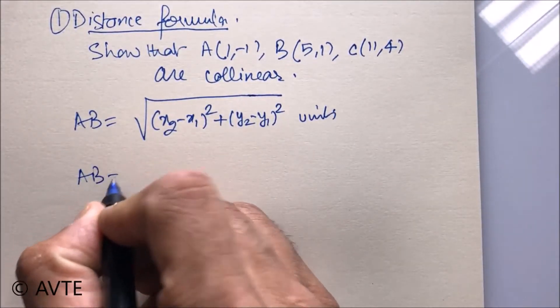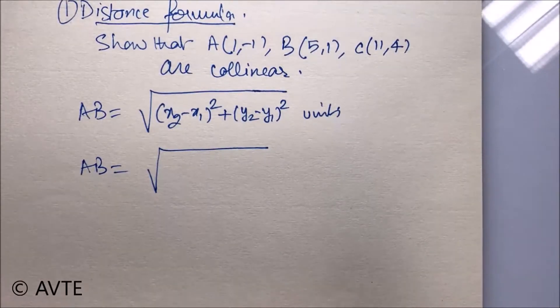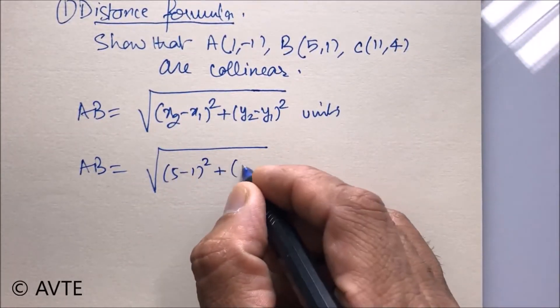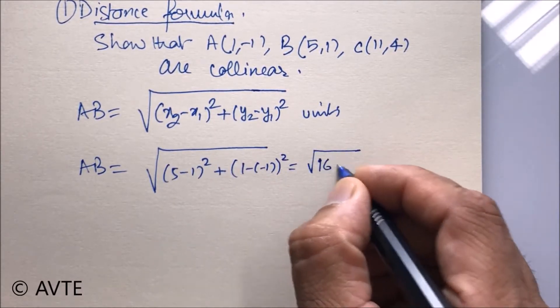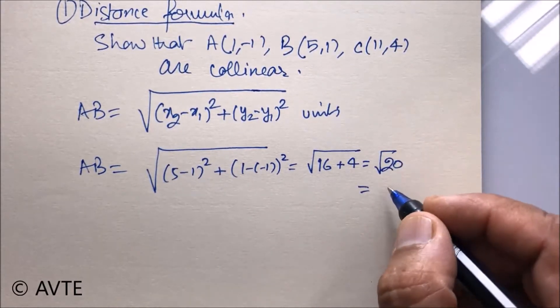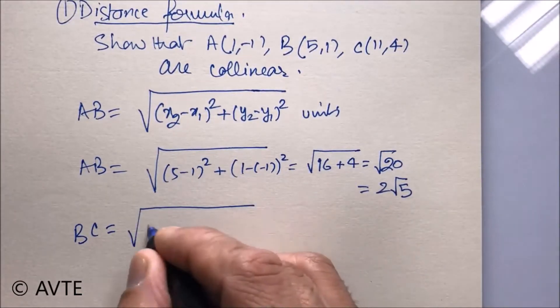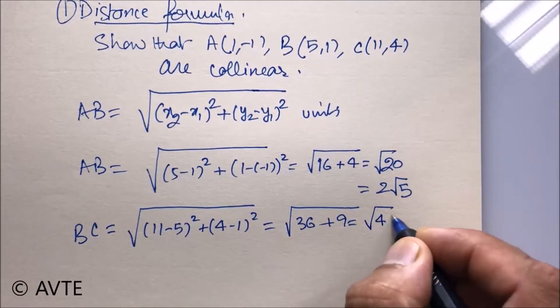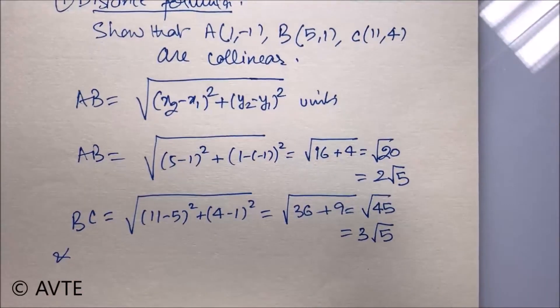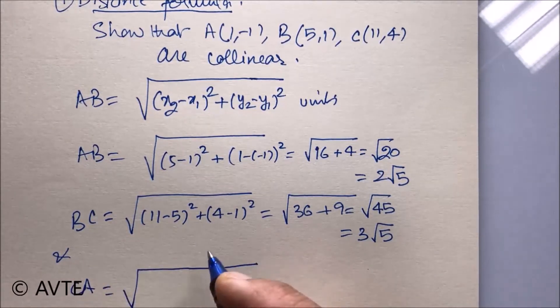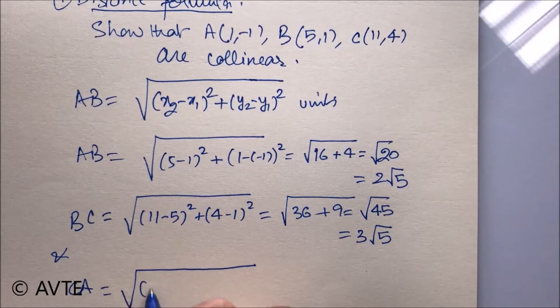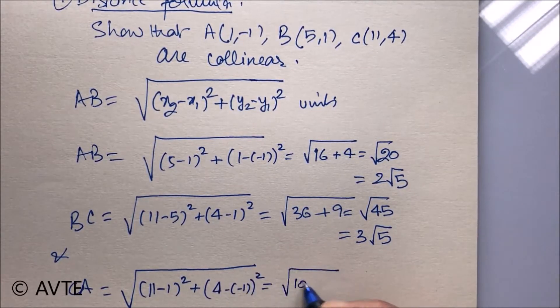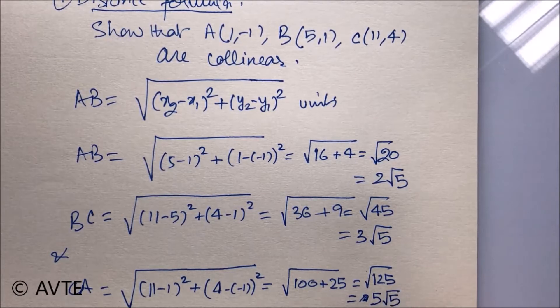And this is a very basic thing. So we are making it first. And now calculating CA. And this is 5 root 5.